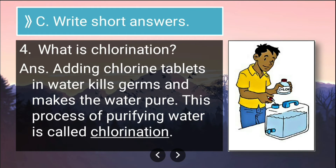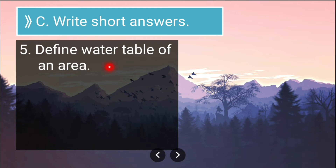Fourth short answer: what is chlorination? Adding chlorine tablets to water kills germs and makes the water pure — this process is called chlorination. Chlorine is an element, also called a halogen in scientific terms, which is added to water and kills germs, thereby purifying the water.